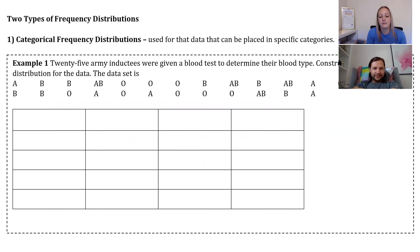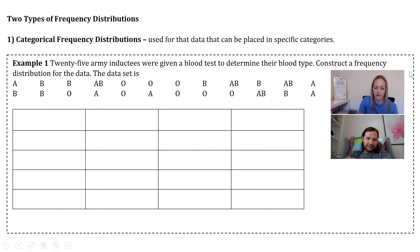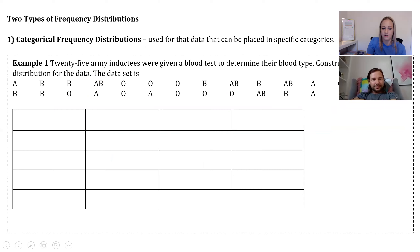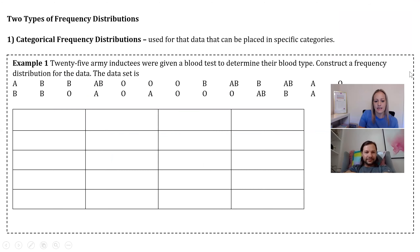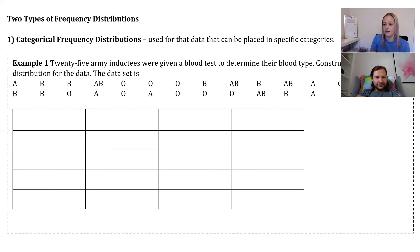The first type of frequency distribution we'll look at is a categorical one, used for data that can be placed in specific categories — so not numerical, just categorical. The first example: 25 army inductees were given a blood test to determine their blood type. We want to construct a frequency distribution for the data. A frequency distribution is basically a fancy name for a table that organizes all your data nicely.